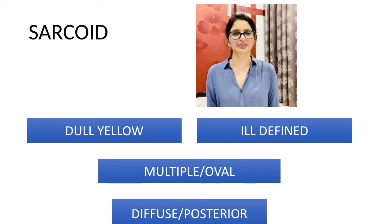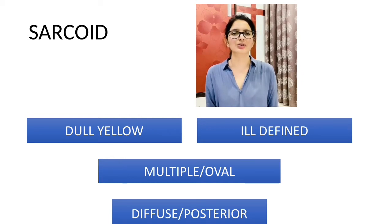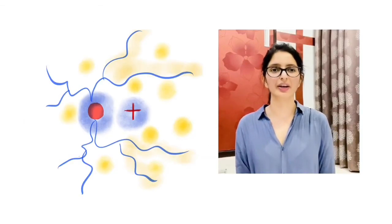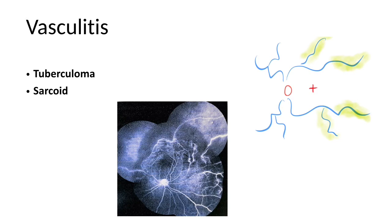Coming to a sarcoid lesion — these are usually ill-defined, dull yellow in color, oval in shape, and usually multiple in number. This is because there is diffuse choroidal inflammation, unlike tuberculosis where there is localized inflammation. So usually these lesions occupy partial thickness of the choroid. In sarcoidosis, there is associated optic nerve head inflammation and intense vascular sheathing. Vasculitis is one of the most prominent features of sarcoidosis, which is very much generalized, while in cases of tuberculosis it is occlusive in nature and very much localized.